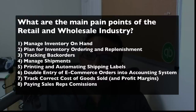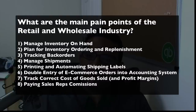Tracking back orders is really important — when the customer orders something that you don't have in stock, you want to make sure you know what's going on with that order so you can fulfill it as soon as you can. Managing shipments and printing and automating shipping labels are also common pain points. Double entry of e-commerce orders into the accounting system is really big. Tracking the correct cost of goods sold and profit margins of your product, and paying sales reps commissions, are also common pain points in this industry.